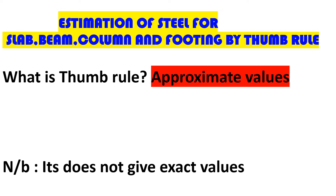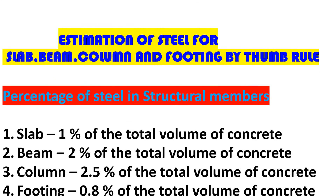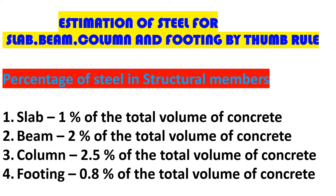The thumb rule gives us an approximate value — it does not give an exact value, but it is a value we can work with based on certain established factors. The structural members and the percentage of steel we are going to use are: the slab is 1% of the total volume of concrete, the beam is 2%, the column is 2.5%, and the footing is 0.8% of the total volume of concrete.